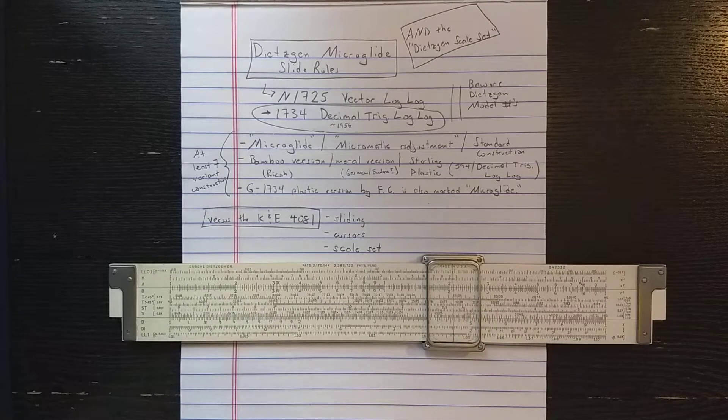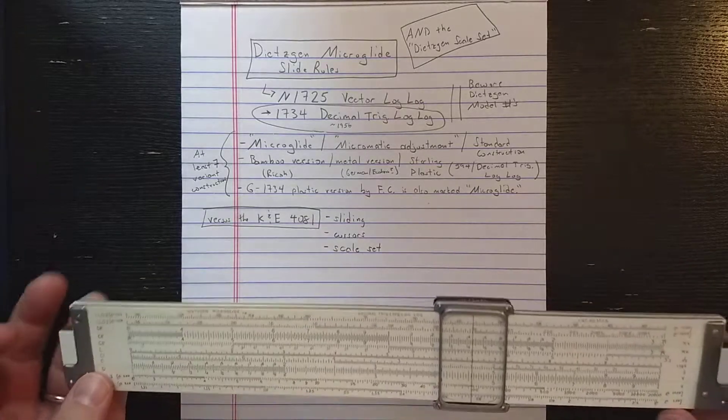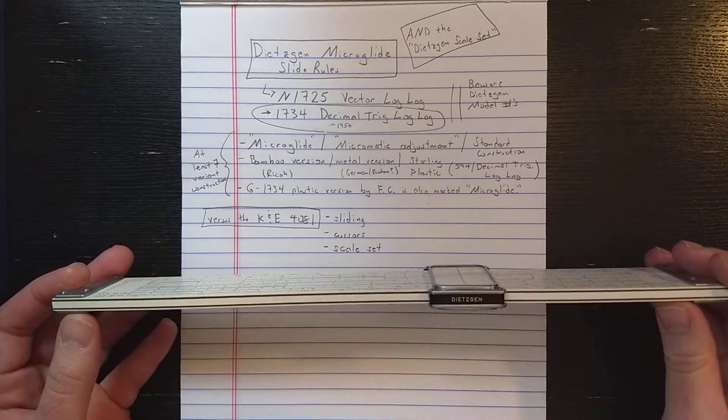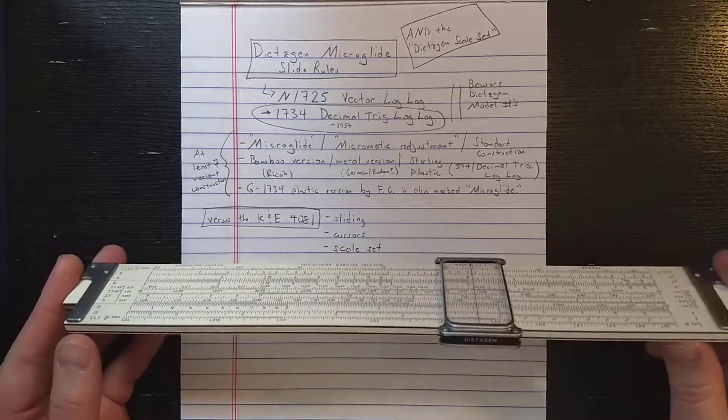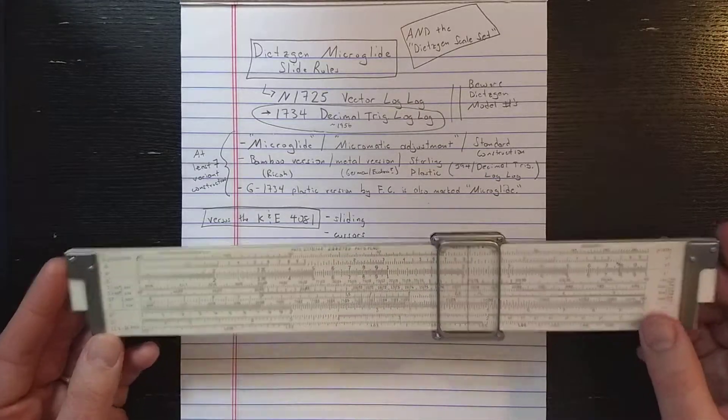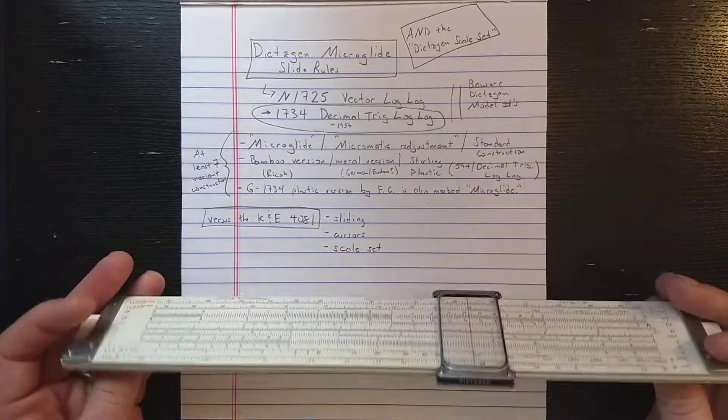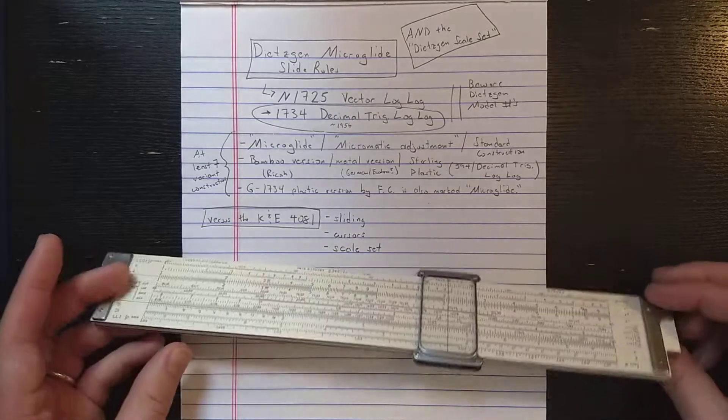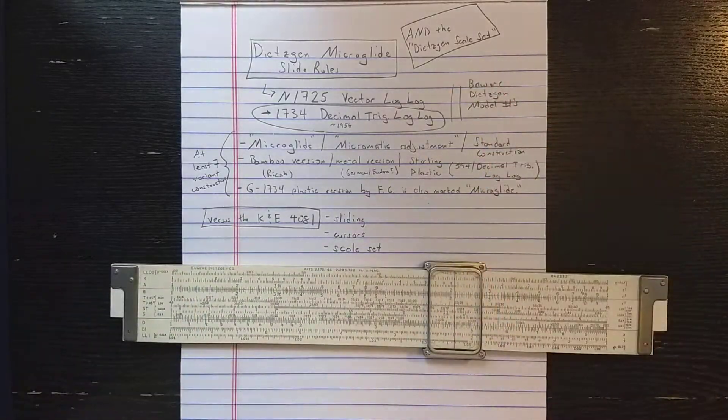All right, we're snowed in here on the east coast, so there's no school, and this will be my second video for the day. I want to talk about two things: this Dietzen microglide slide roll and microglide slide rolls in general, and what I want to call the Dietzen scale set.